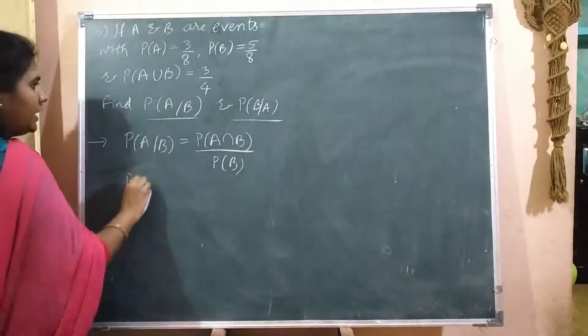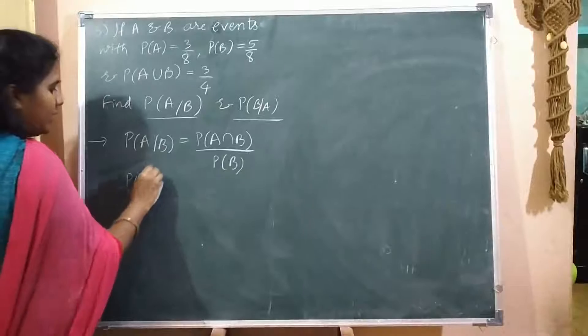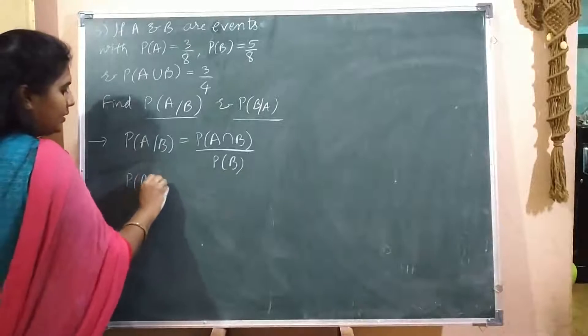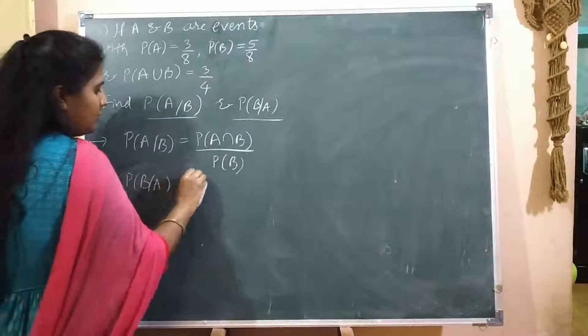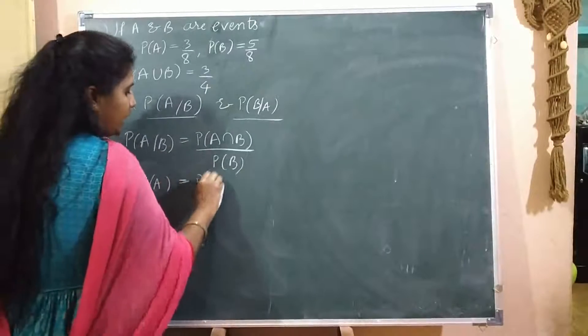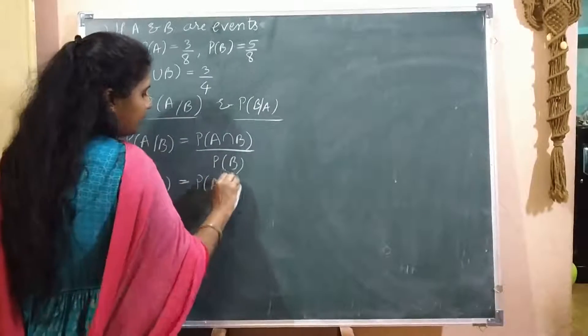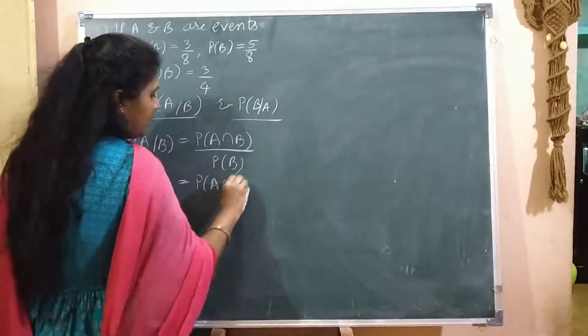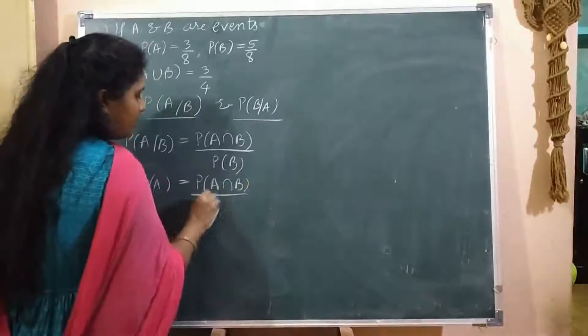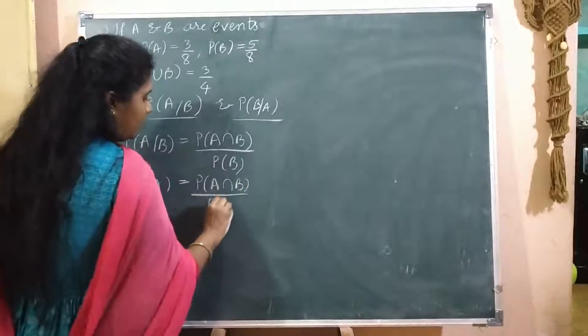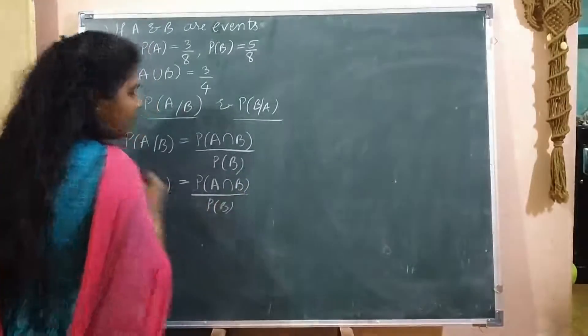And P of B given A equals P of A intersection B divided by P of A.